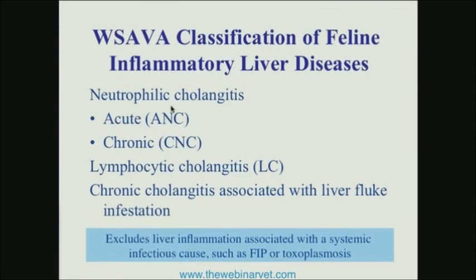The WSAVA group has been working over the last number of years to try and standardize the categorization of liver disease, including inflammatory liver disease in cats, and has basically come up with three categories. The first is neutrophilic cholangitis, which can have histologically a form that looks very acute — almost all neutrophils — or a form that looks more chronic, where it's a mixture of neutrophils and lymphocytes. The second type is lymphocytic cholangitis, where the inflammatory infiltrate is virtually pure lymphocytic.